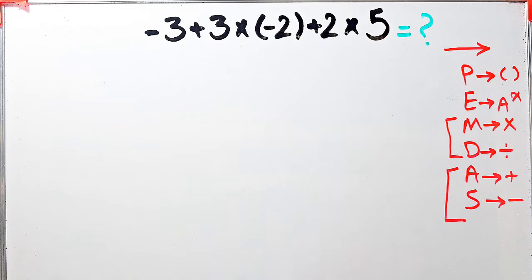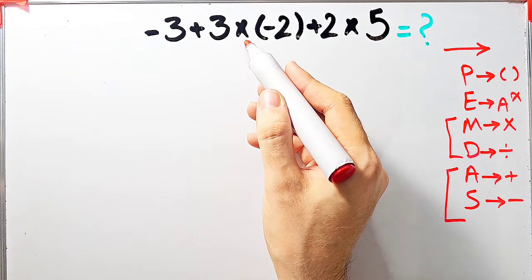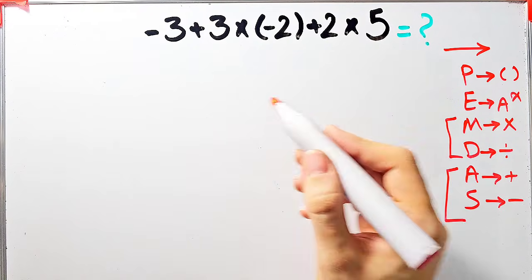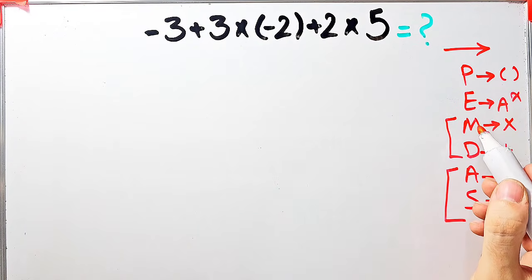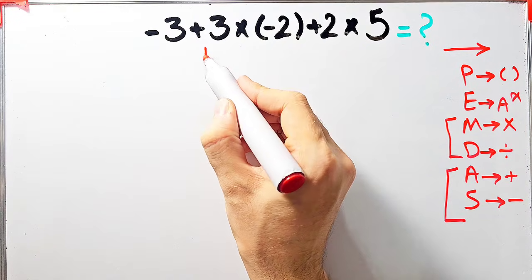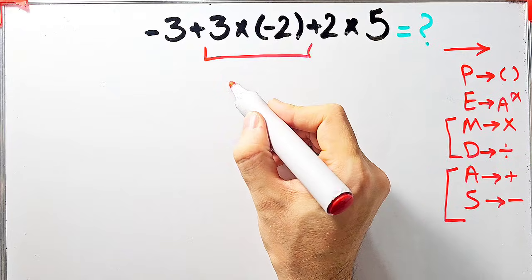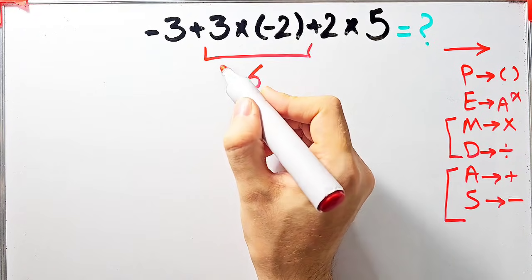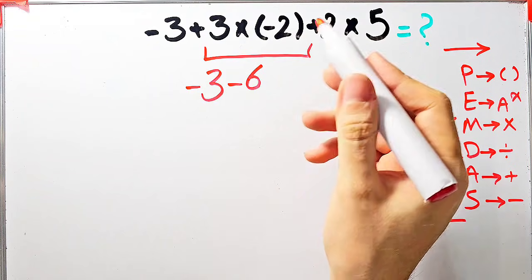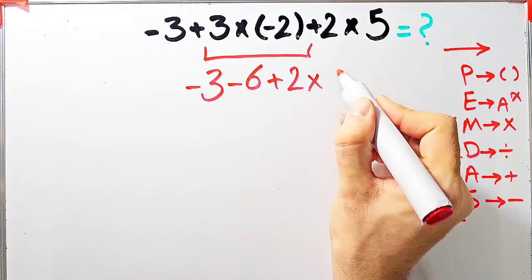In this question we have addition and multiplication. According to the PEMDAS rule, we first simplify the multiplication because it has higher priority than addition. 3 times negative 2 equals negative 6. Now the question is: negative 3 minus 6, then plus 2, then times 5.